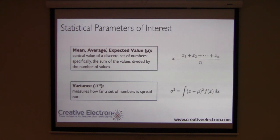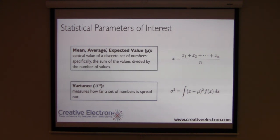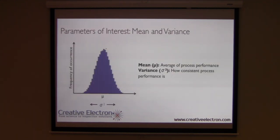Let's look at the two parameters of interest when we talk about statistical analysis of your manufacturing process. The first one is mean — also called the average or expected value — which is fairly intuitive. It's the sum of the values divided by the number of values, the average that we talk about all the time. Variance, on the other hand, is not as intuitive, although if you think of it as how much your process varies, then it has a very intuitive explanation. Here's the formula for the variance.